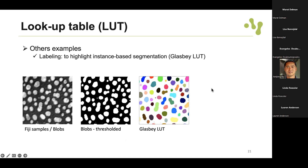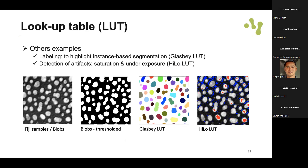Another example of a lookup table is the high-low lookup table to detect saturation and other exposure issues. This lookup table shows in red when you have the maximum value in the intensity range and in blue the lowest intensity. We can see saturation but also underexposure, and this can be useful even during acquisition - you can use this lookup table to avoid saturation and other artifacts.